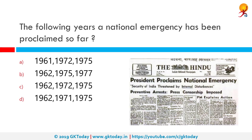The years in which national emergencies have been proclaimed in India are 1962, 1971, and 1975. The first instance was from 26 October 1962 to 10 January 1968 during the Sino-Indian War, when India's security was threatened by external aggression. The second was from 3 December 1971 to 21 March 1977, proclaimed during the Indo-Pakistan War, later extended along with the third proclamation from 25 June 1975 to 21 March 1977 under controversial circumstances of political instability under Indira Gandhi's prime ministership.